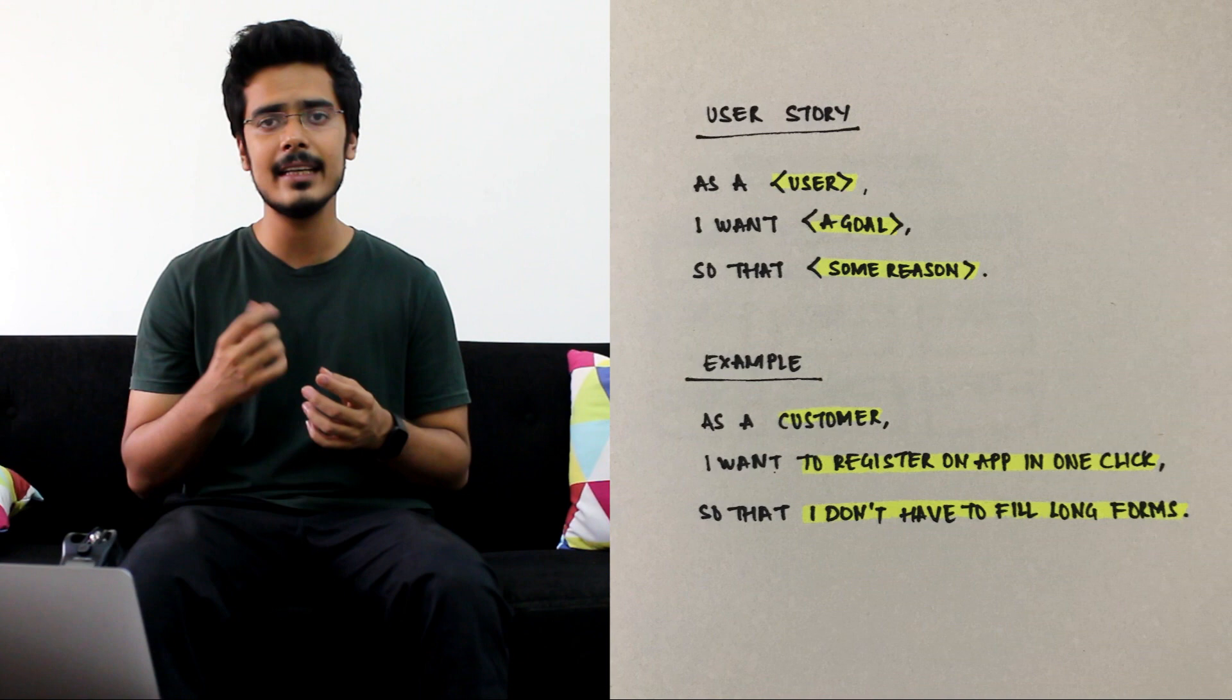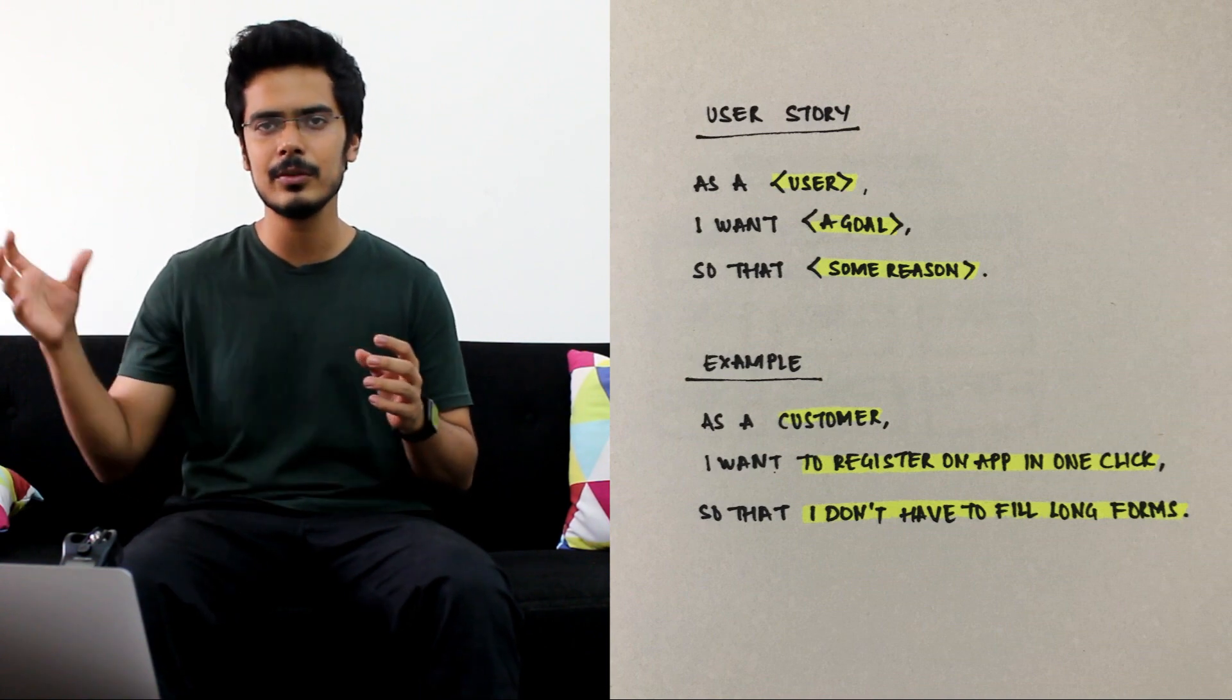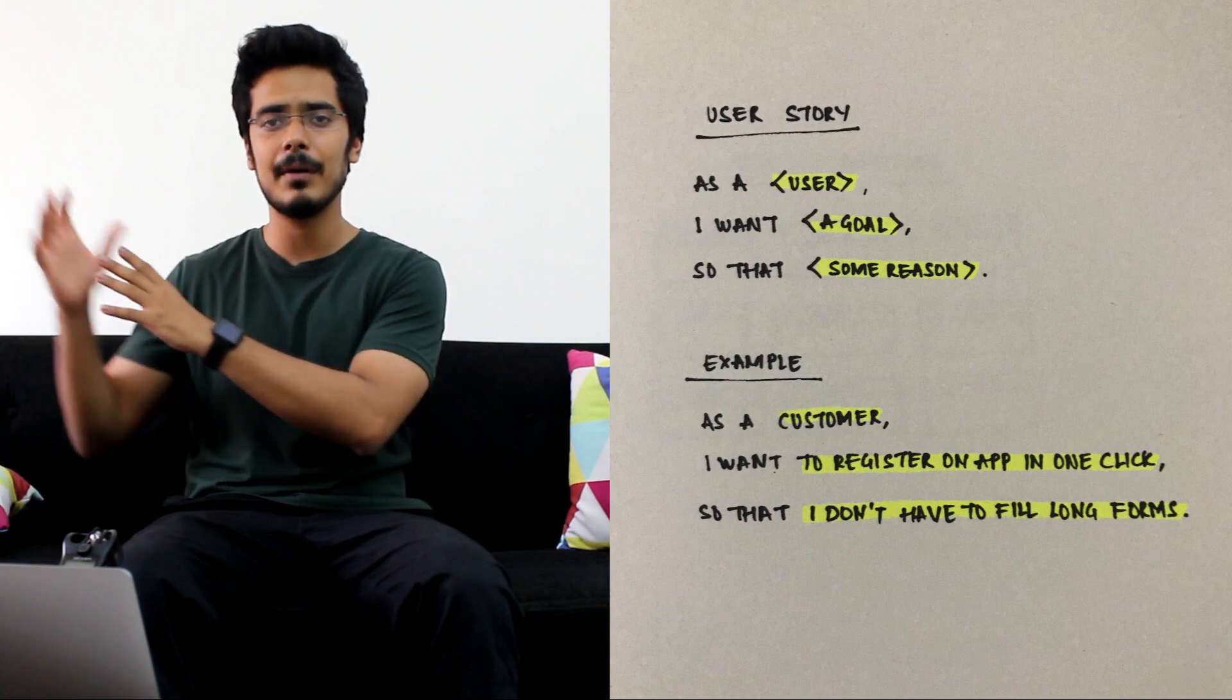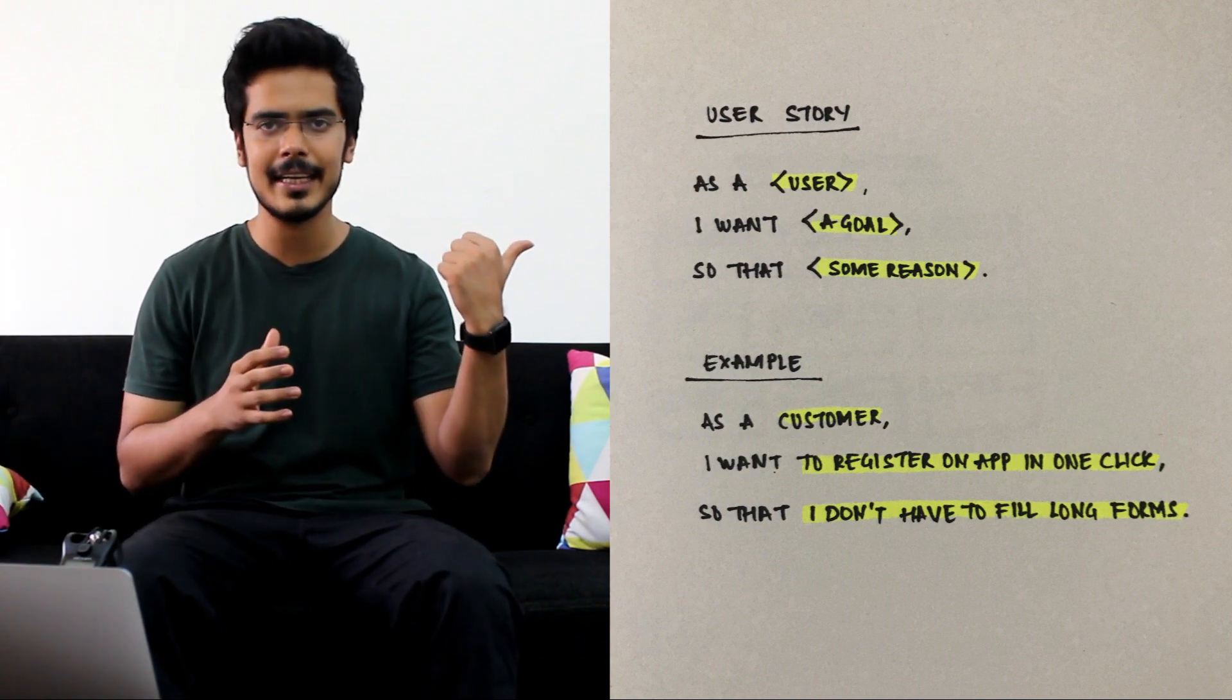And each of these requirements is basically written as a user story. A user story is written as: as a user I want to be able to do this so that I can end up achieving something. One example of a user story is written right here.